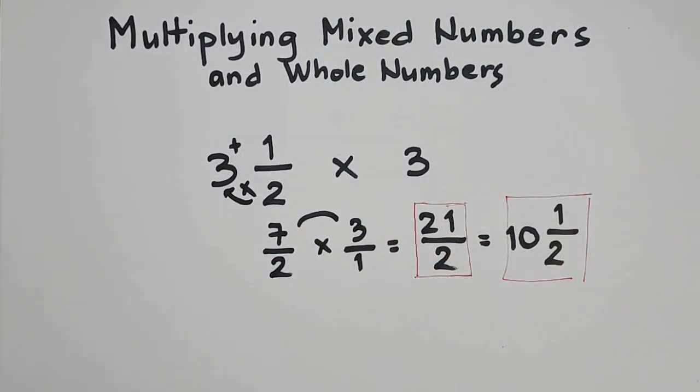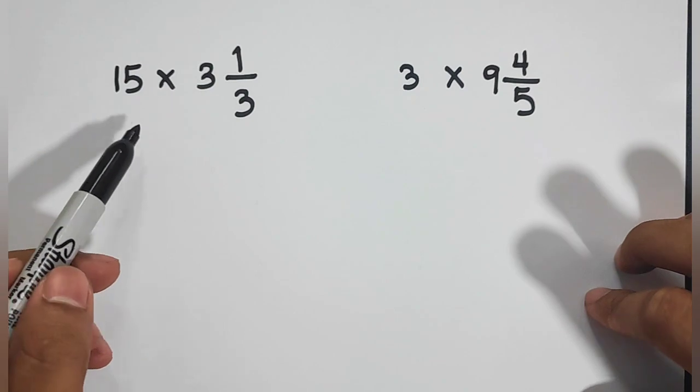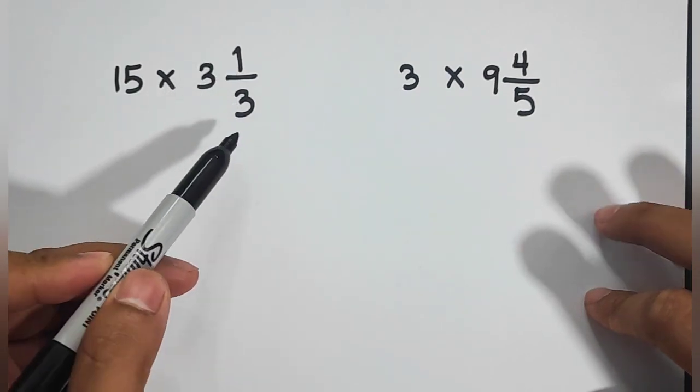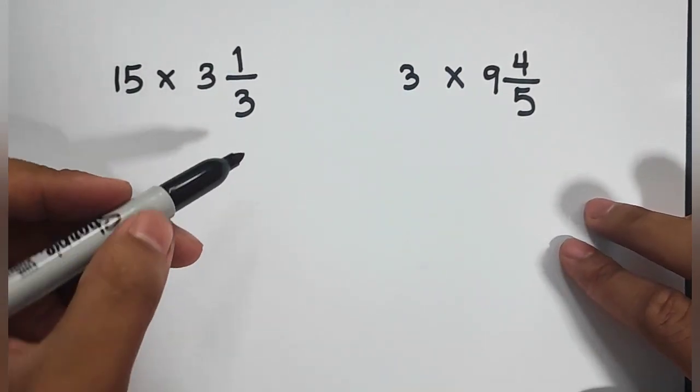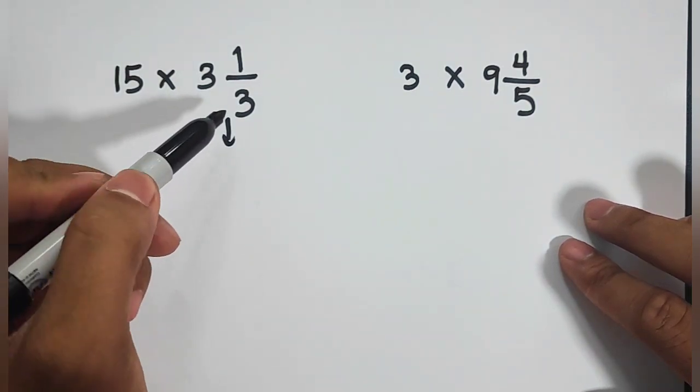So, in the next part of our video, we will talk about another example wherein we will multiply whole number by a mixed number. Now, let's talk about these two examples. So we have here 15 times 3 and 1 third. So first thing we need to do is to convert first this mixed number into improper fraction.